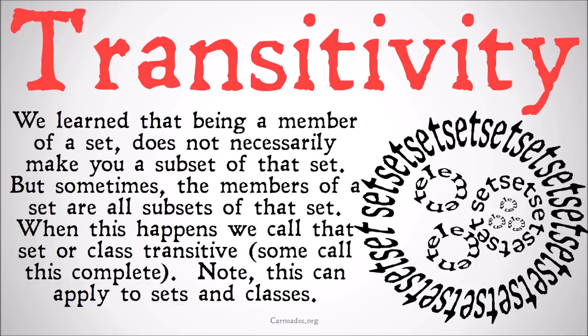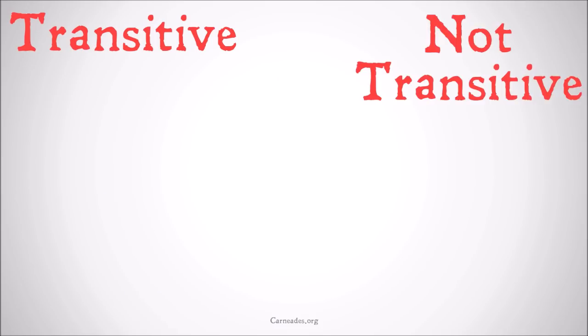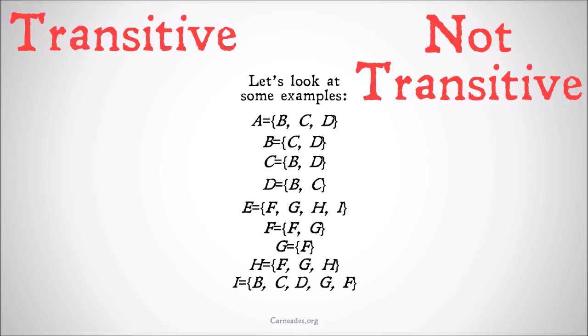Some call it complete, not transitive. We're going to use transitive, but just be aware that you may see complete instead in the literature. This can apply to sets or classes — a set can be transitive, a class can be transitive, all across the board. Let's look at some examples to help us really get a handle on this. Take a look at all of these sets. They're all explicitly defined — see if you can guess which ones are transitive and which ones are not. Remember, a transitive set is one such that all of the elements of the set are also subsets of the set.